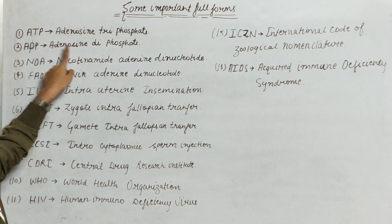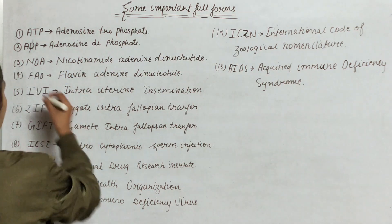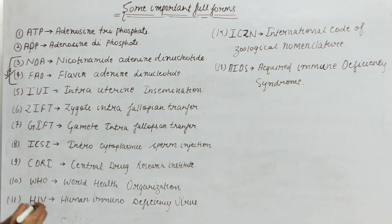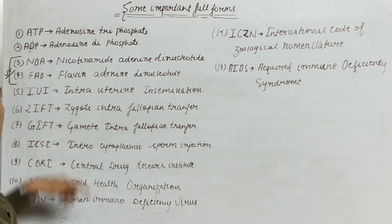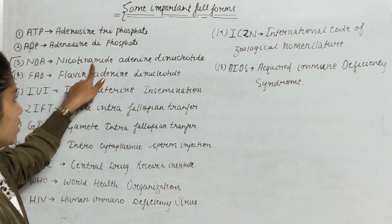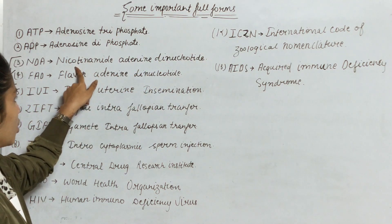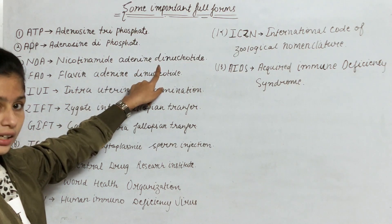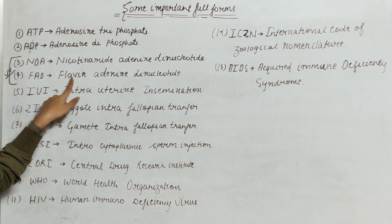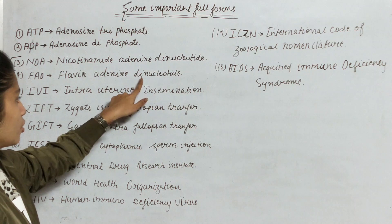Next is NAD — Nicotinamide Adenine Dinucleotide. This is among the most important, number 3rd and 4th. Next is FAD — Flavin Adenine Dinucleotide.